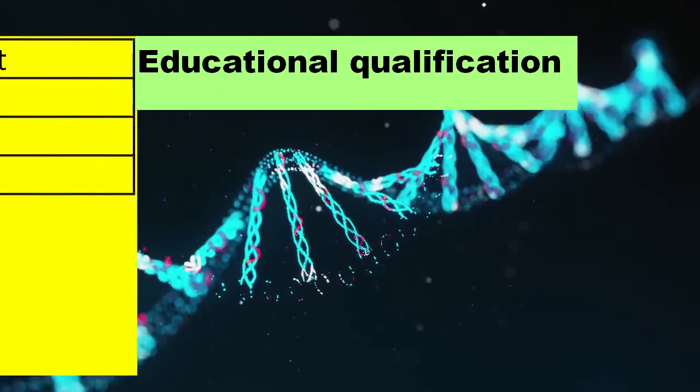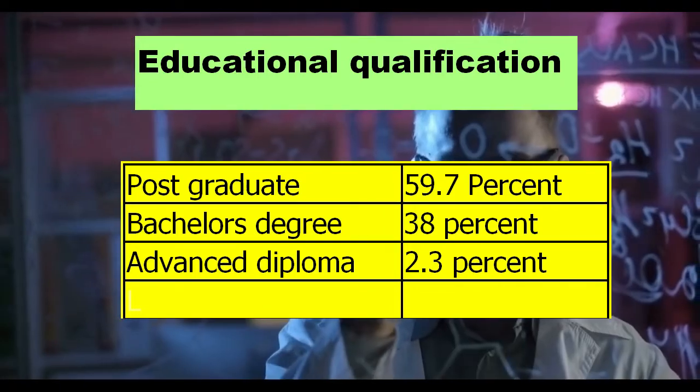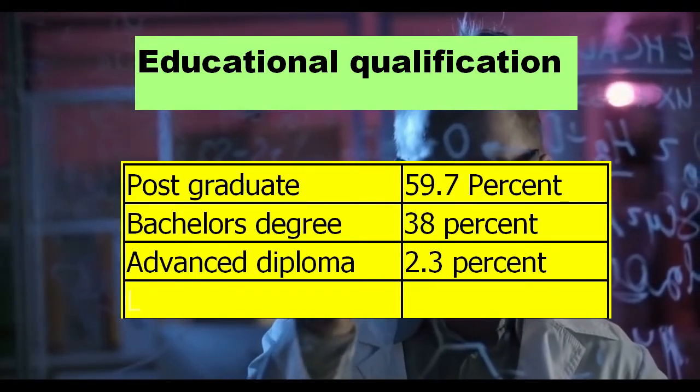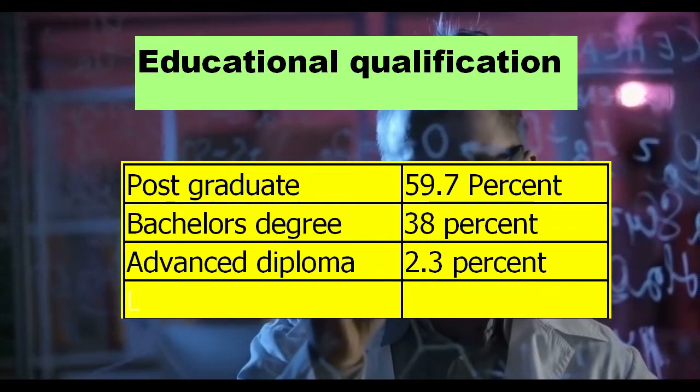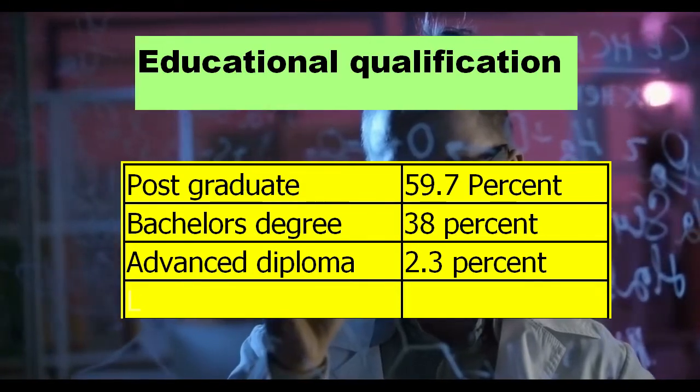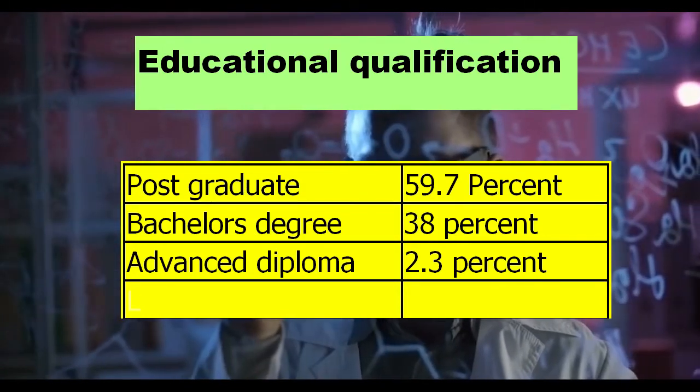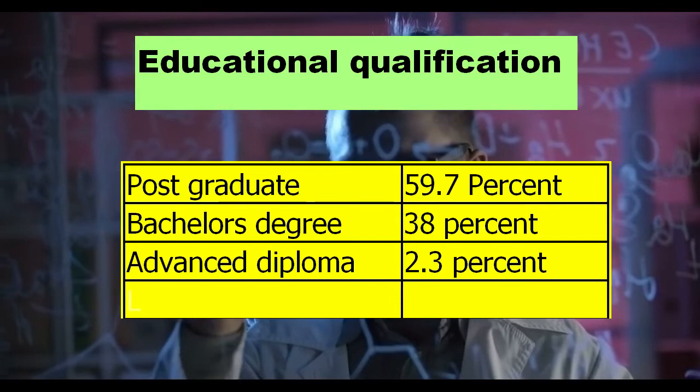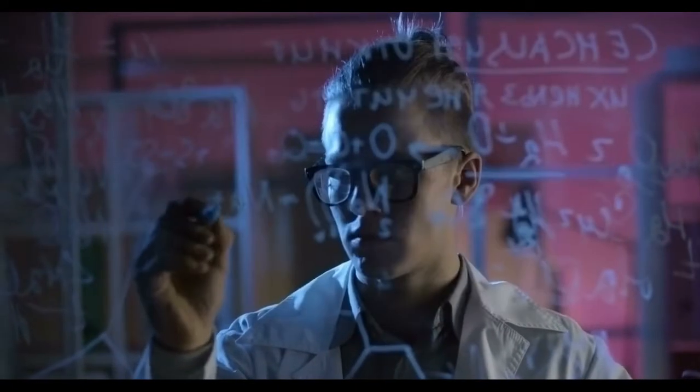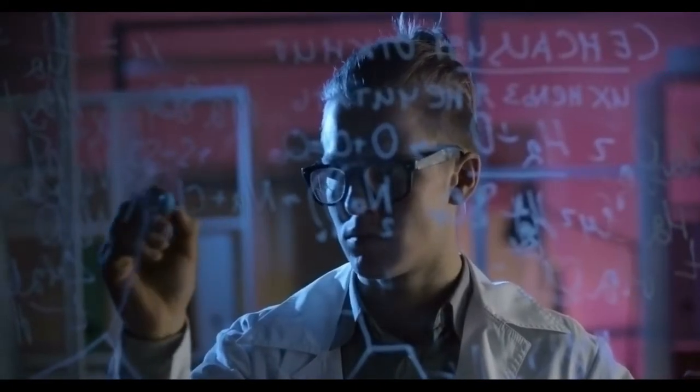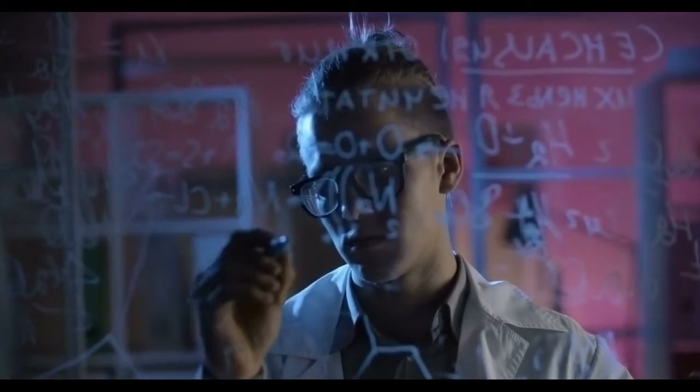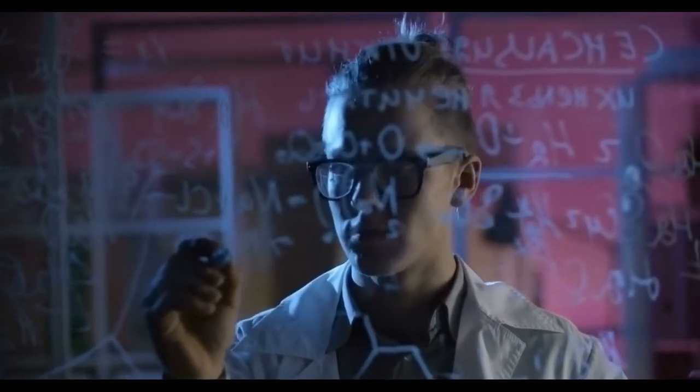59.7% of the biochemists who are employed in Australia have done post-graduate studies, 38% of them have bachelor's degree, 2.3% of them have advanced diploma. From this data, we can interpret that bachelor's degree can be considered as a good starting point but having a post-graduate educational qualification will open many more employment chances for you.